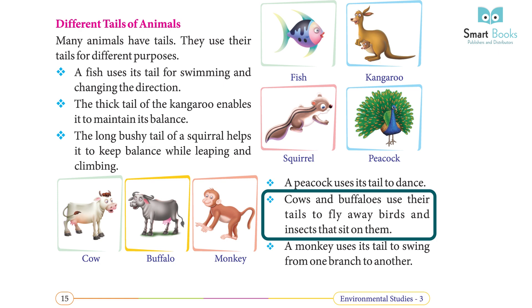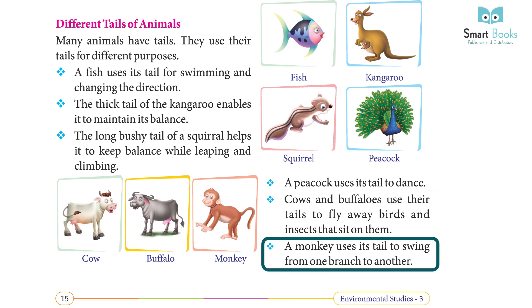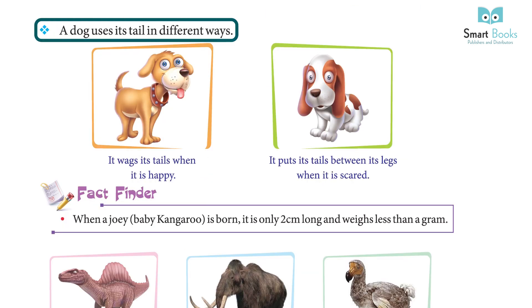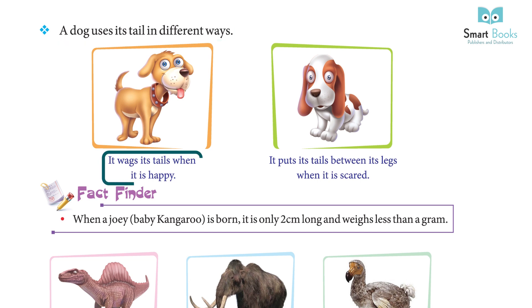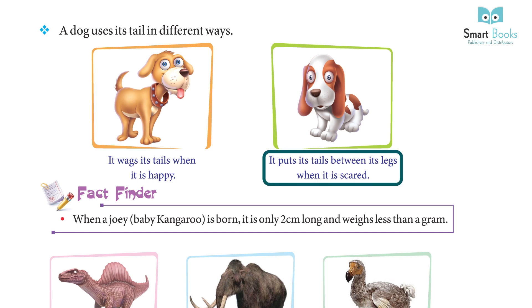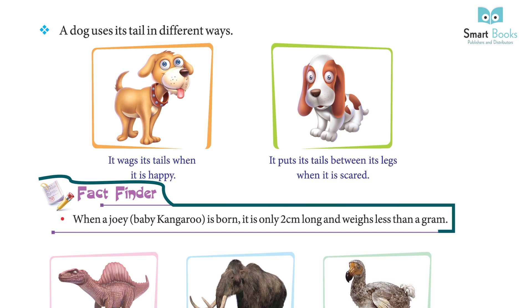Cows and buffaloes use their tails to fly away birds and insects that sit on them. A monkey uses its tail to swing from one branch to another. A dog uses its tail in different ways — it wags its tail when it is happy and puts its tail between its legs when it is scared. Fact: when a baby kangaroo is born, it is only two centimeters long and weighs less than a gram.